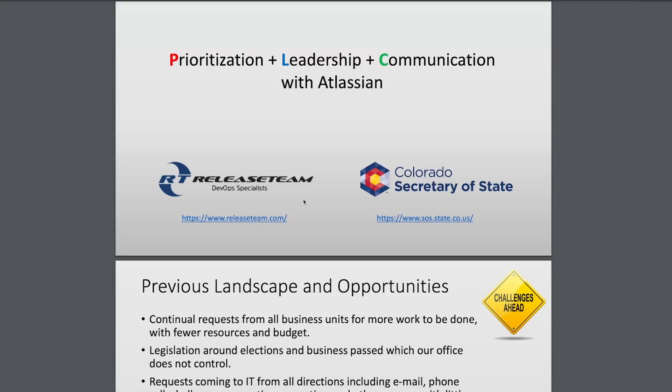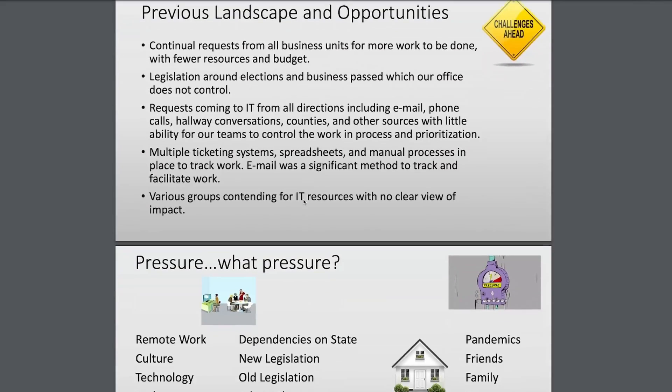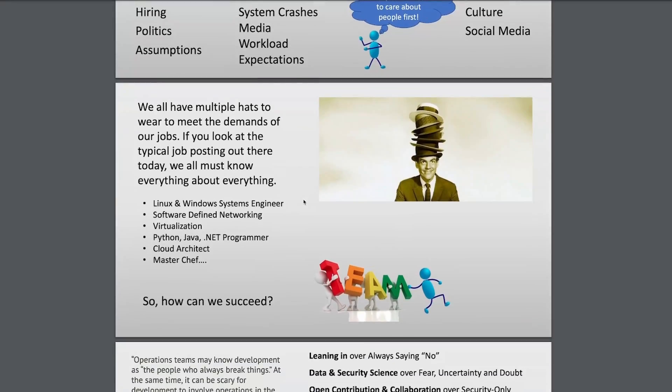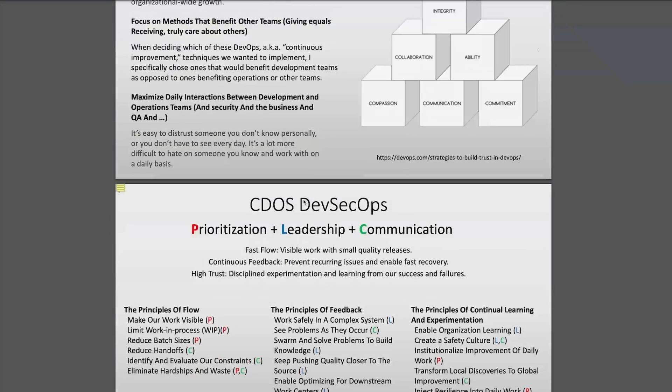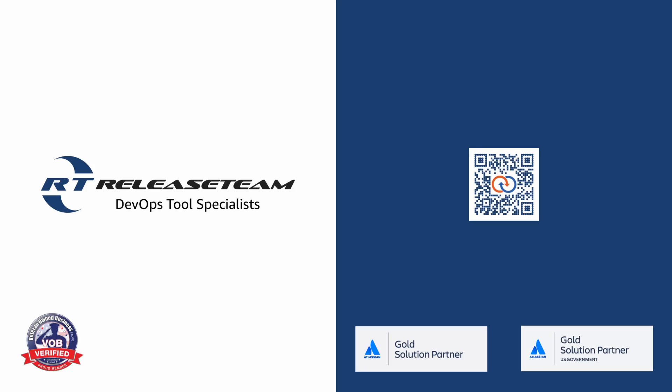Have a DevOps project in mind — integrating new technologies, modernizing a legacy system, or just exploring your options? From assessments to licensing, Release Team has you covered. See how they helped the state of Colorado migrate and consolidate multiple legacy tools and processes into Jira Service, aligned with DevSecOps principles of fast flow, continuous feedback, and high trust. Go to releaseteam.com/casestudy to learn more. Release Team is an Atlassian Gold Solution Partner for both public and private sectors. Make sure you smash that like button, subscribe to the channel, and check out the links below to support the channel and try out the apps from our sponsors. That's it for this video and I'll see you in the next one.